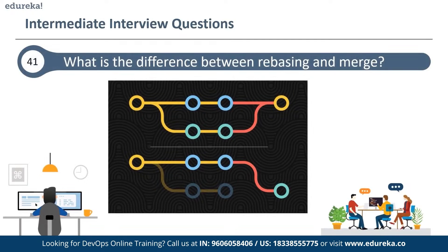The next question is: what is the difference between rebasing and merging? The git rebase command is used to integrate changes from one branch into another — it is an alternative to the merge command. The difference is that rebase rewrites the commit history to produce a straight linear succession of commits, whereas merging is Git's way of putting a forked history back together again. The git merge command takes independent lines of development created by git branches and integrates them into a single branch.